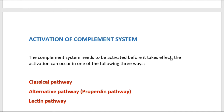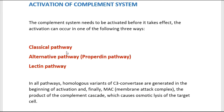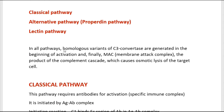The complement system needs to be activated before it takes effect. Activation can occur in one of three ways: the classical pathway, the alternative pathway (also called the properdin pathway), and the lectin pathway. In all three pathways, homologous variants of C3 convertase are generated at the beginning of activation, and the final product is the membrane attack complex (MAC), which causes osmotic lysis of the target cell.